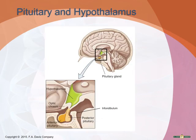The pituitary gland influences more body processes than any other gland in the endocrine system. It's about the size of a pea and sits underneath the hypothalamus, inside the skull. It lies in the sella turcica, the cavity within the sphenoid bone, and a stalk called the infundibulum connects the hypothalamus and the pituitary together.